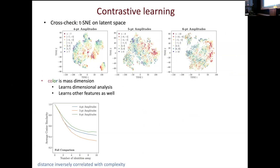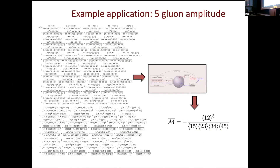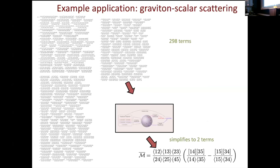We did a number of checks. You can verify that the latent space actually represents properties of the actual amplitudes — we found it learned things like the mass dimension of the amplitude, with correlations between mass dimension and distance in the latent space. It also learns that the distance between terms correlates with the number of identities away — the farther away, the less similarity. The bottom line is that it works, and now we're able to simplify expressions that are almost arbitrarily complicated using this contrastive learning. For example, a 5-gluon scattering amplitude inputs to the network and simplifies to a single term. A 288-term graviton scattering amplitude simplifies to two terms. This is extremely useful to people interested in scattering amplitudes because it allows you to see the essence of the physics.